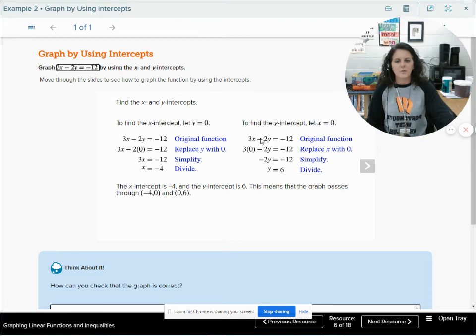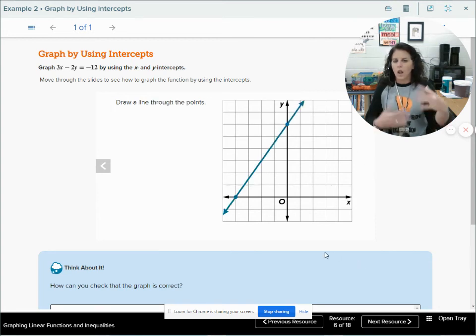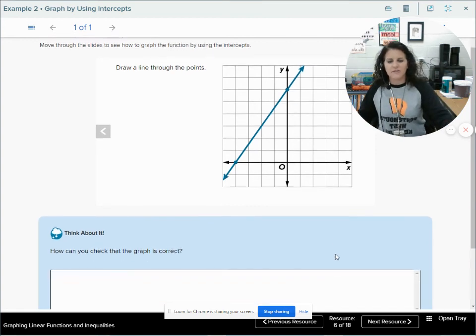Same thing here. We have our original function. This time, though, instead of replacing y with 0, we're going to replace x with 0. That gets rid of this term. Now, don't forget that negative there. Just because this goes away doesn't mean that minus goes away. That's attached to that 2, making it a negative 2y. Divide both sides by negative 2, and I get 6. So, when x is 0, y is 6. So, I have this ordered pair. Now, we can plot those two points and connect them with a line. And voila! There we have it. There's the graph of our function.